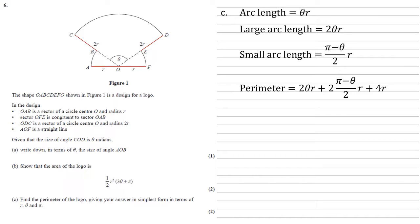That middle term, the two multiplying it and the two on the bottom will cancel out. And then if we multiply both the π and the θ by R, that's going to become πR minus θR.